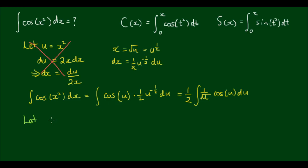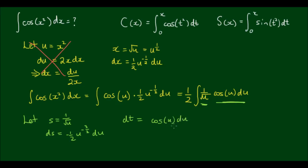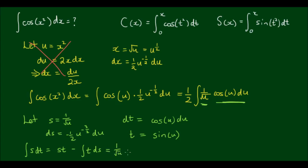For integration by parts, let s equal 1 over the square root of u. Then ds equals negative one half u to the power of negative three over two du. And let dt equal cos(u) du, so t equals sin(u). In integration by parts, the integral of s dt equals s times t minus the integral of t ds. Substituting in, we get 1 over root(u) times sin(u) minus the integral of sin(u) times the remaining terms.